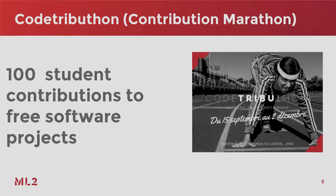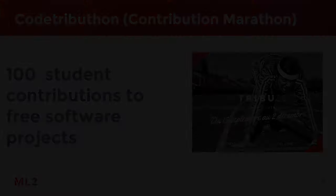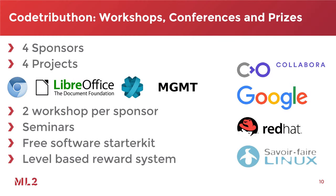We decided to push it one step further and we're doing the Code Tributon, which is a contribution marathon. We want to get 100 student contributions to Free Software over the next semester — that's pretty ambitious. To do that, we've teamed up with four sponsors, each responsible for one of the different projects: Chromium, LibreOffice, Ring — which is kind of a Skype replacement using free software — and MGMT, which is a management software by Red Hat.